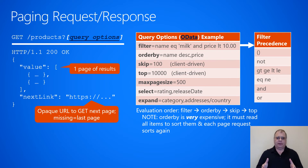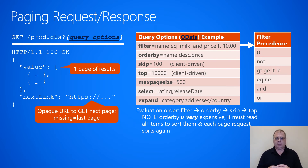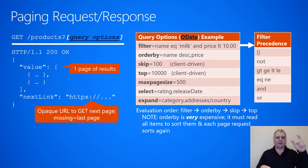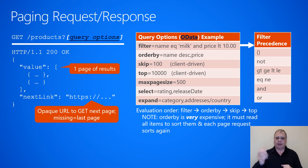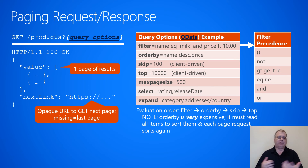Some services offer some of these query options; others don't — it's up to each service to decide what makes sense. For filtering over a collection, the query parameter value is typically something like a field name, an operator such as equals, and a value like 'milk'. You can also use Boolean logical operators like and or or — for example, return every product where the name equals milk and the price is less than $10.